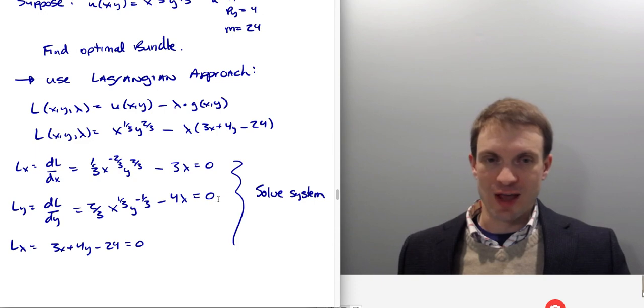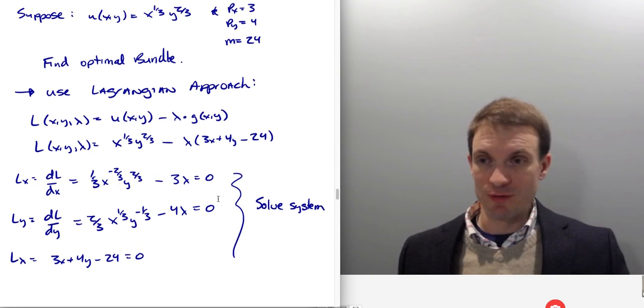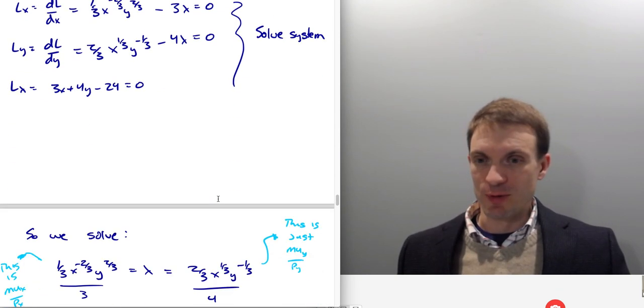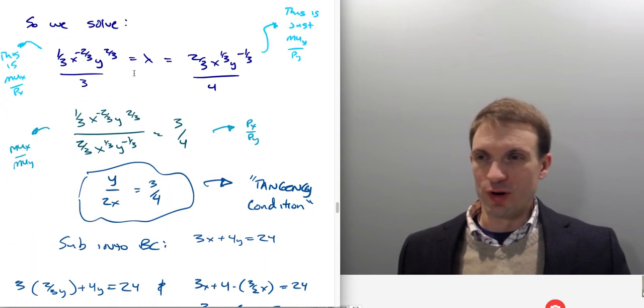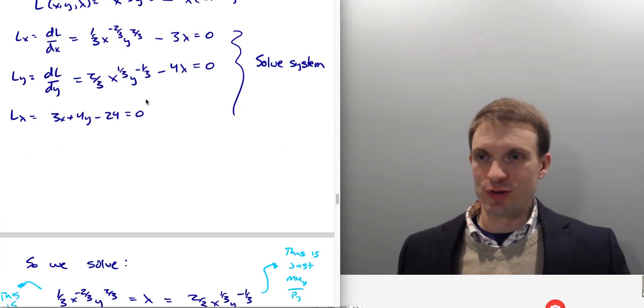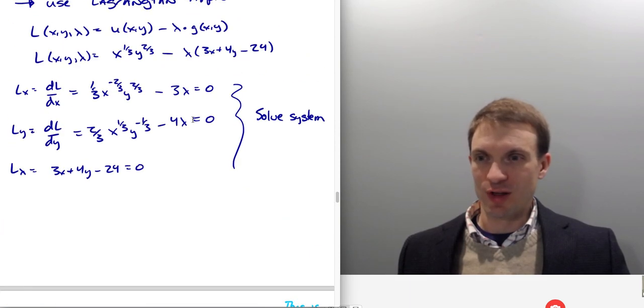And that's gonna give us our tangency condition. With the Cobb-Douglas preferences, these are nice, well-behaved preferences. We are gonna get a tangency solution, an interior solution for our optimal bundle. So what we're gonna do to solve is, I am going to solve this for Lambda, solve this for Lambda, and then substitute.